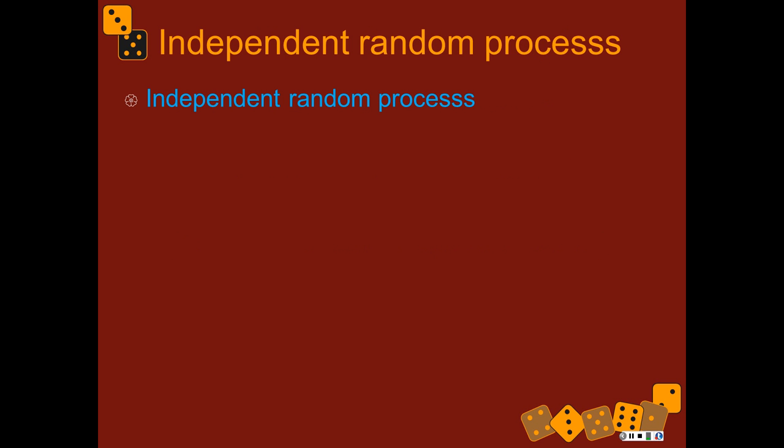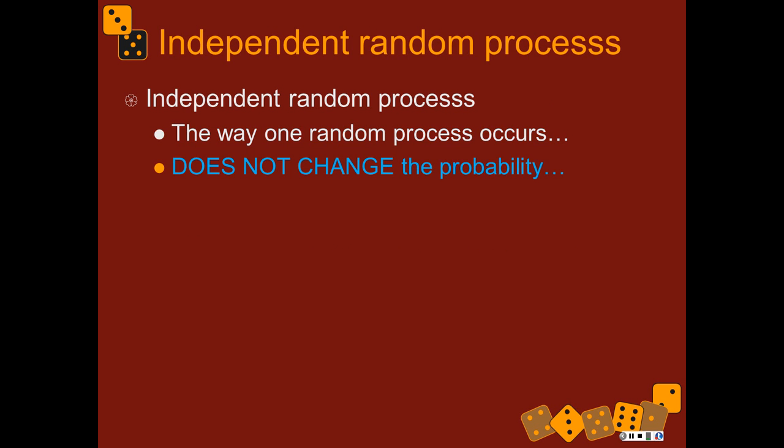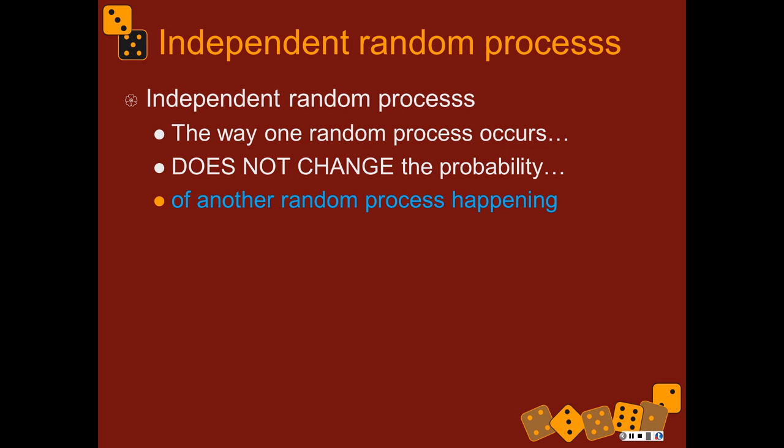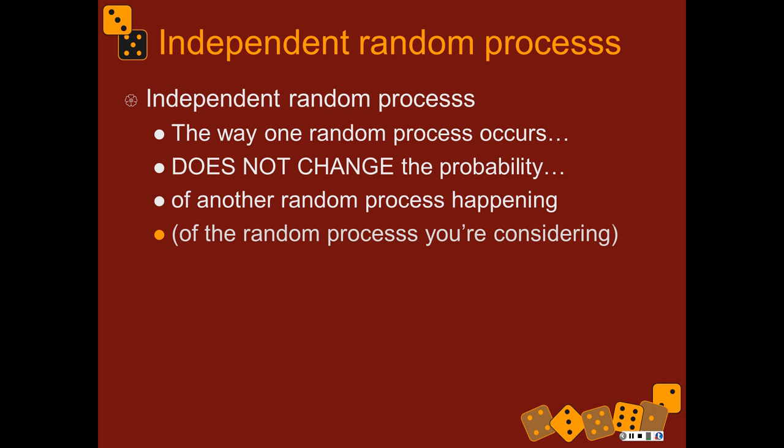Independence of random processes means that the way one random process occurs does not change the probability of the way another random process could happen. The certain outcome in one process doesn't shift the probabilities of outcomes in another random process. You can think of the processes as being chained together — if they're independent, there is no chain. They're not linked. But if they're dependent, they're linked together in a chain, and the probabilities at one point in the chain will change probabilities at another point.